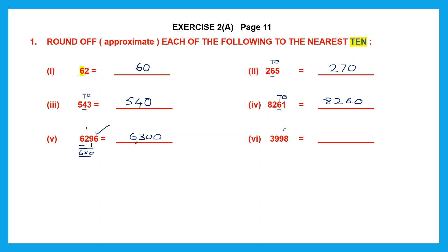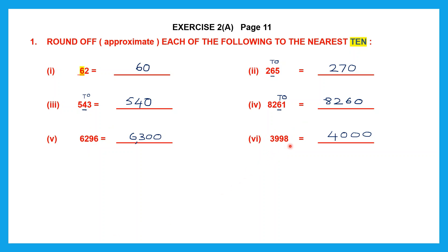Question 6: the digit in the tens place is 9 and the digit to its right is more than 5. That means the underlined digit should change — I have to increase it by 1. So 9 plus 1 is 10, carry 1. 9 plus 1 is 10, carry 1. 3 plus 1 is 4 — I've got 400. So I write 400 there, and the 8 will be replaced with a 0. My number is 4,000. So we have rounded off 3,998 to the nearest 10 and it's become 4,000.